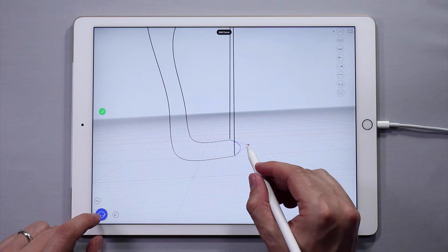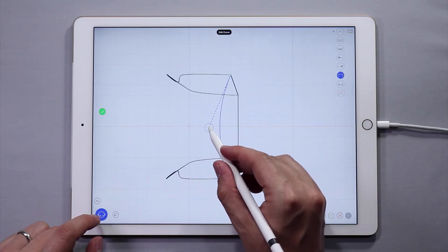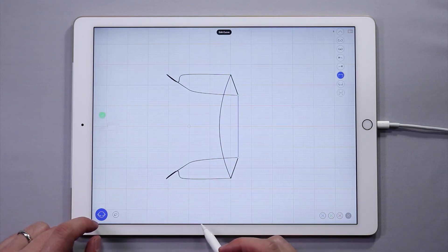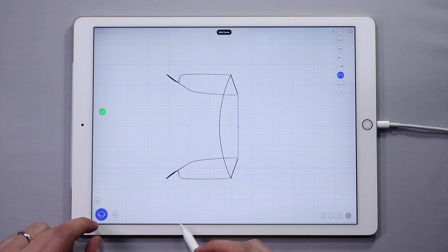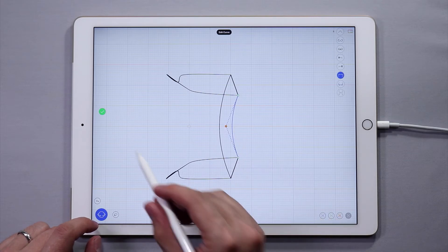Now repeat this for the top of the bag. Tap on the curve, tap and hold to add a point, and move the point to add curvature. So that is looking good.